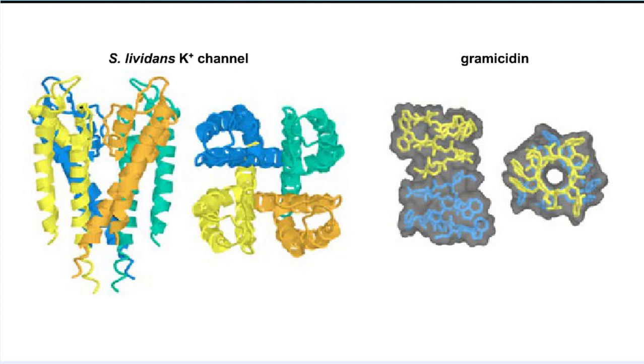Additionally, while porins are formed from membrane-spanning beta barrels, ion channels commonly span the membrane with alpha helices.